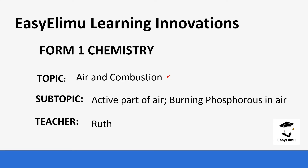Initially we started with identifying which part of air is active by using the candle experiment — we burnt a candle in air. We also used the rusting experiment and finally reacted copper with oxygen. Today we are going to be burning phosphorus in air and using the information we get from that reaction to determine the active part of air.